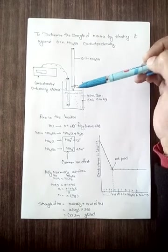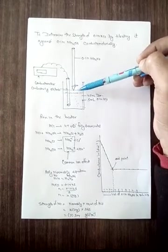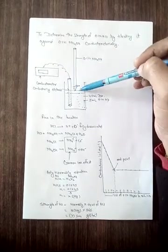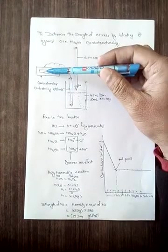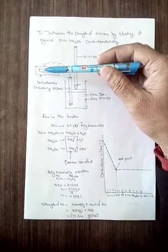HCl is a strong acid and fully dissociated. Conductance is the movement of ions or the ease with which current flows. Since HCl is fully dissociated, the conductance reading will be high initially.